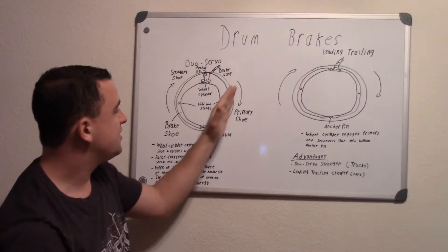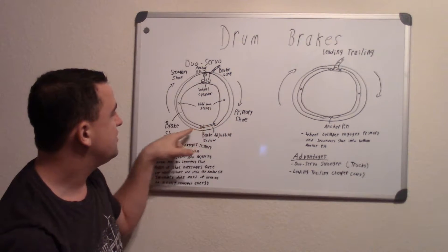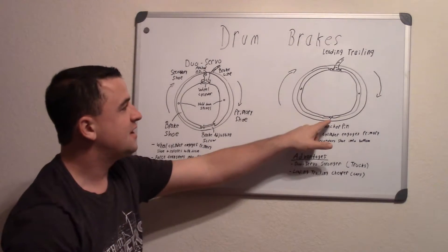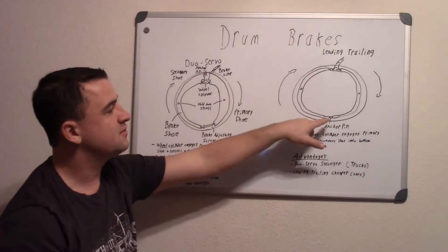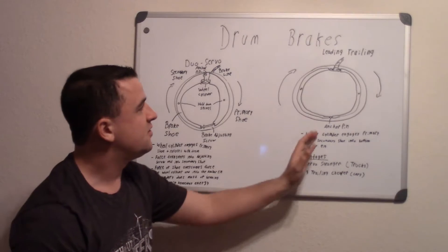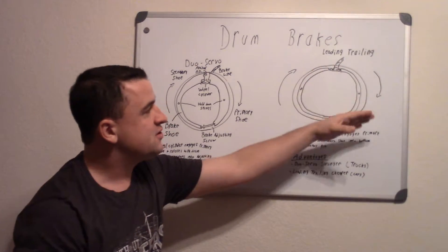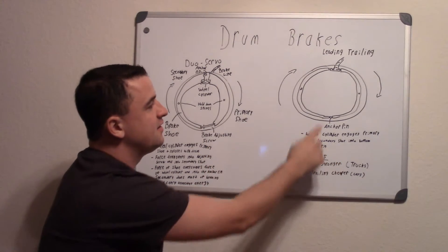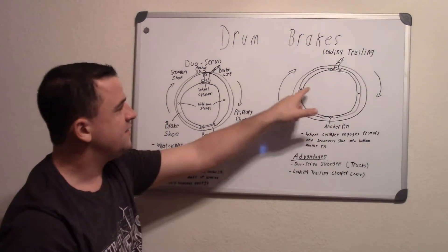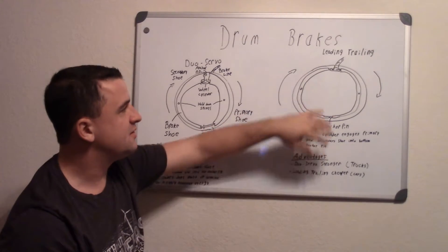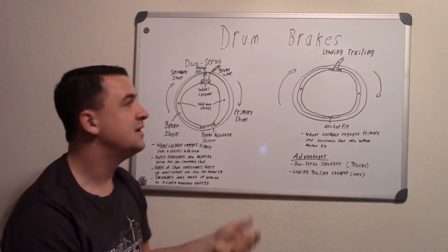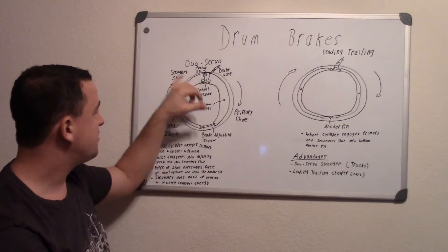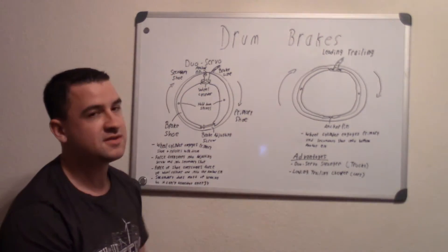So unlike this one, that primary shoe can transfer that energy through this adjuster screw and that adjuster screw rotates with it. But this is a solid anchor pin, like the anchor pin up here. This one is down at the bottom. So because this is the front shoe and it's rotating this way, it's getting most of that energy and it does most of the braking, and this anchor pin stops it and this shoe just does a little bit. When it's in reverse it works the opposite. Same with this. When that all works in reverse that all does the opposite, and these primary and secondary switch on both sides.